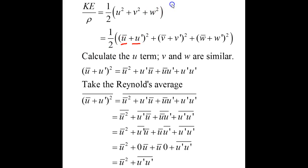Let's look only at the u term. The v and w terms can be calculated in the same way. So we multiply all the terms out, then take the Reynolds average, and apply the rules.